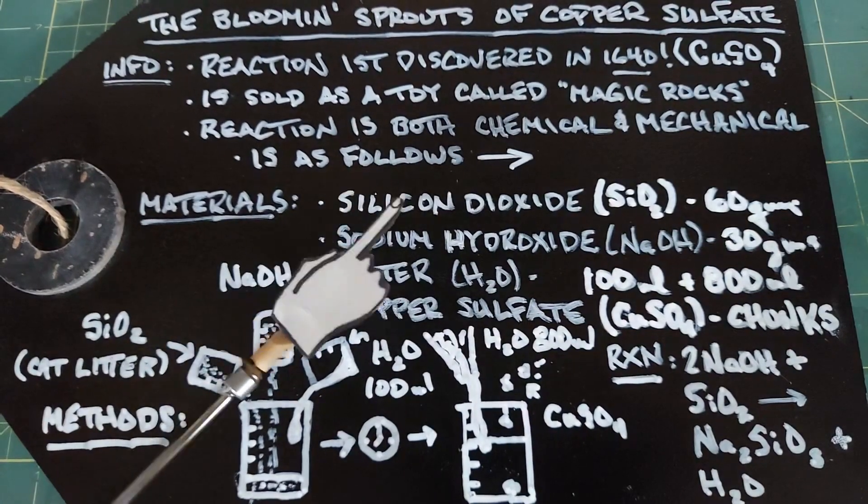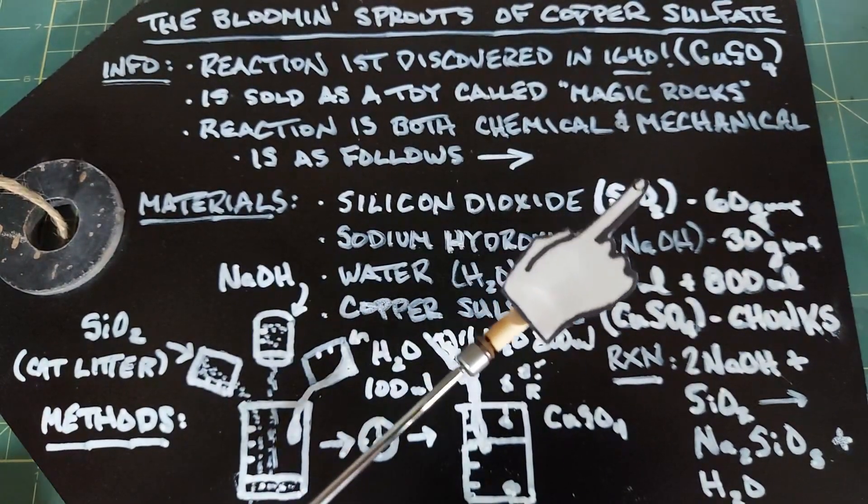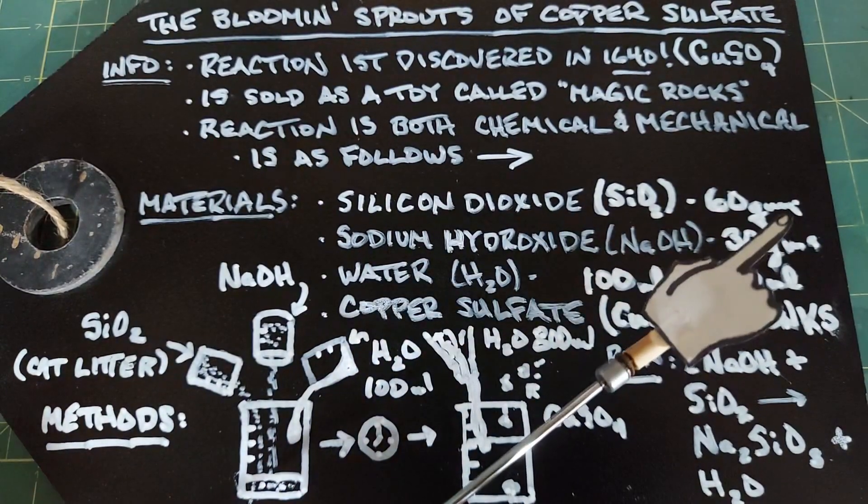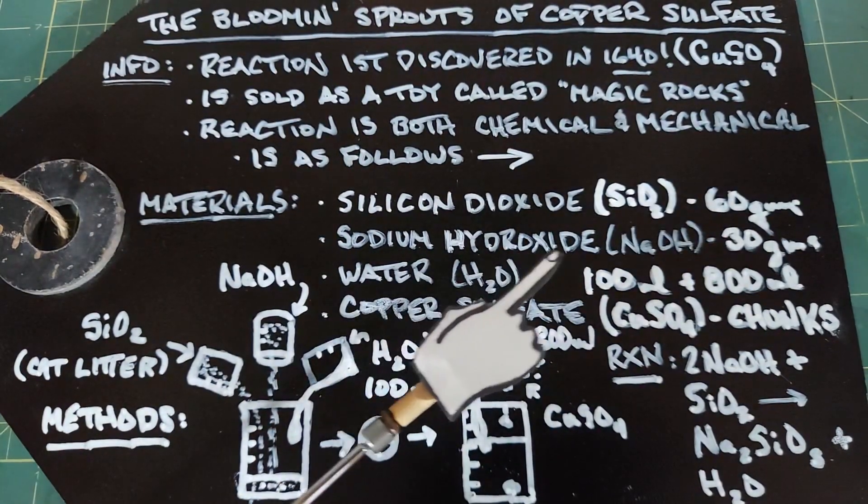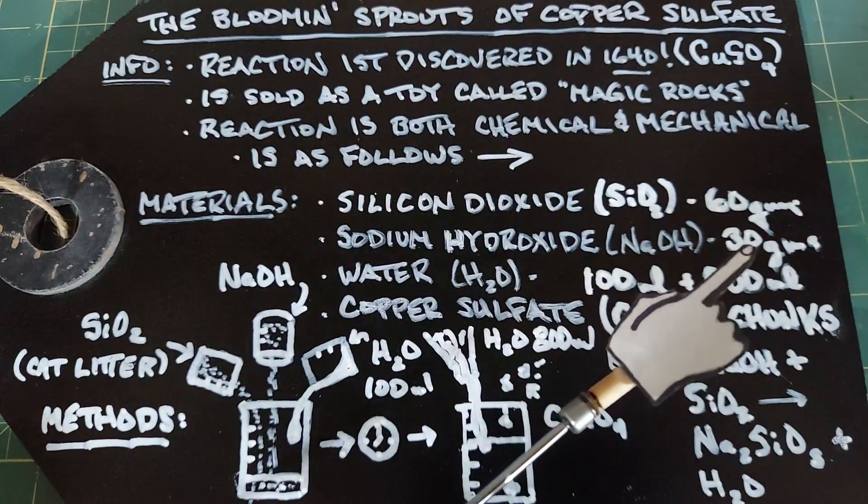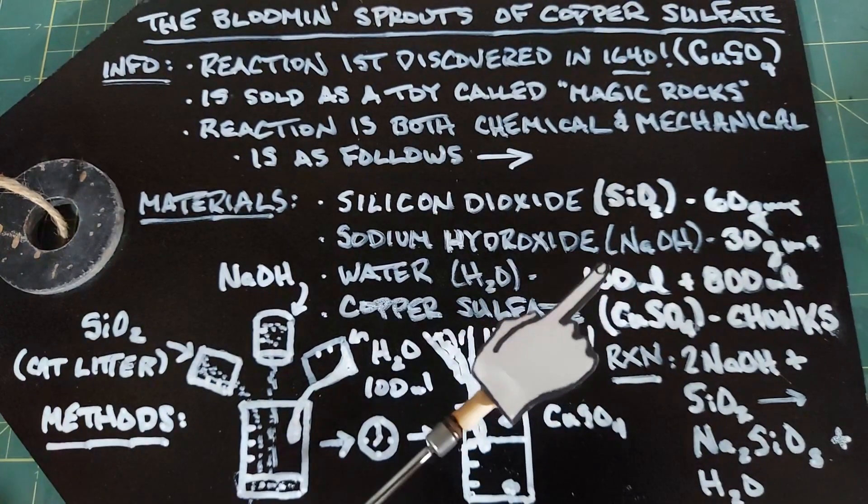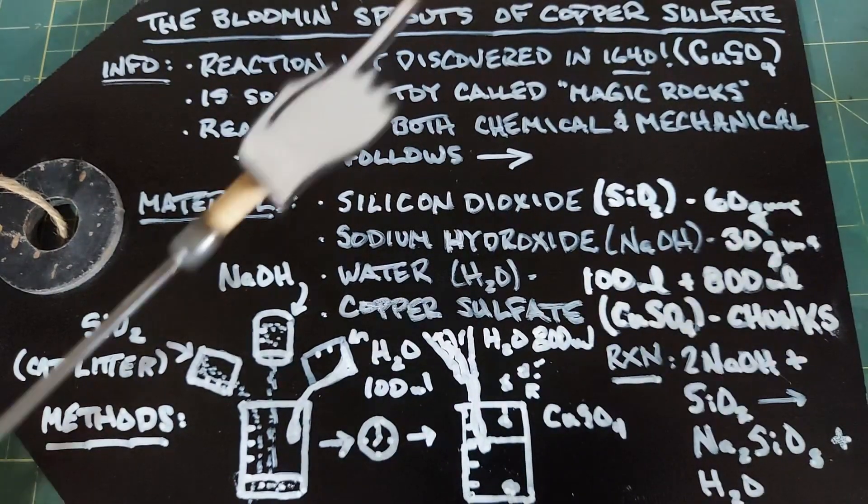Back to our materials here we need the silicon dioxide, the SiO2, which is the cat litter, 60 grams. We need sodium hydroxide, 30 grams. We need water and I wrote down 100 milliliters and 800 milliliters so you need 900 total but it's going to be separated into two amounts.